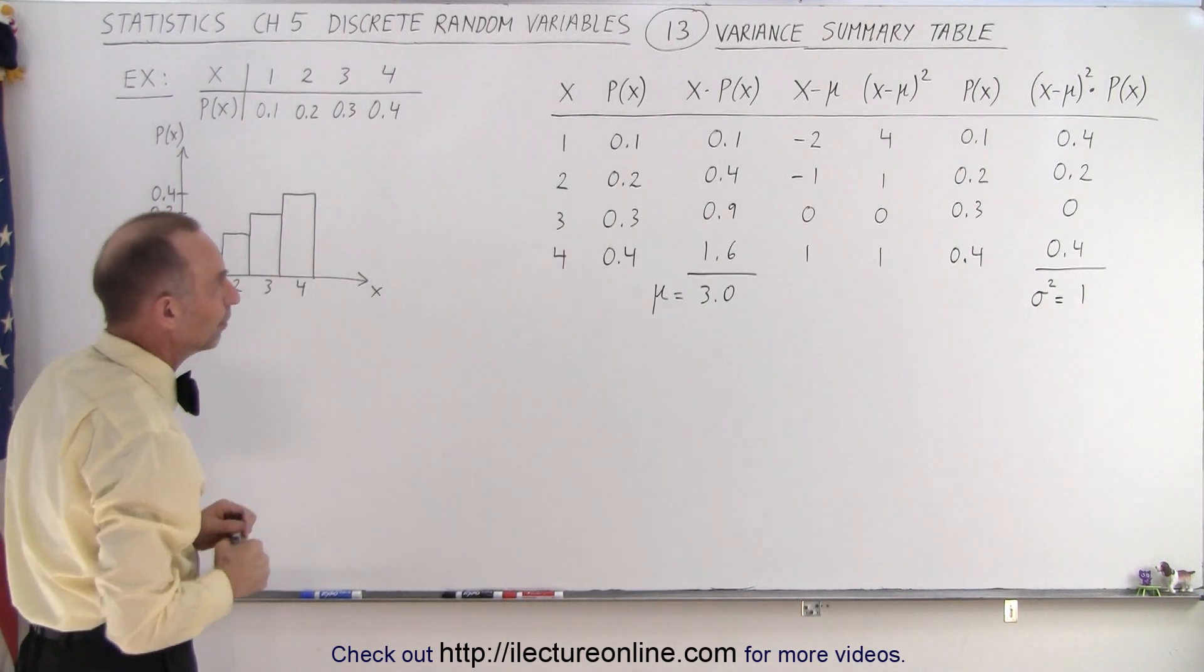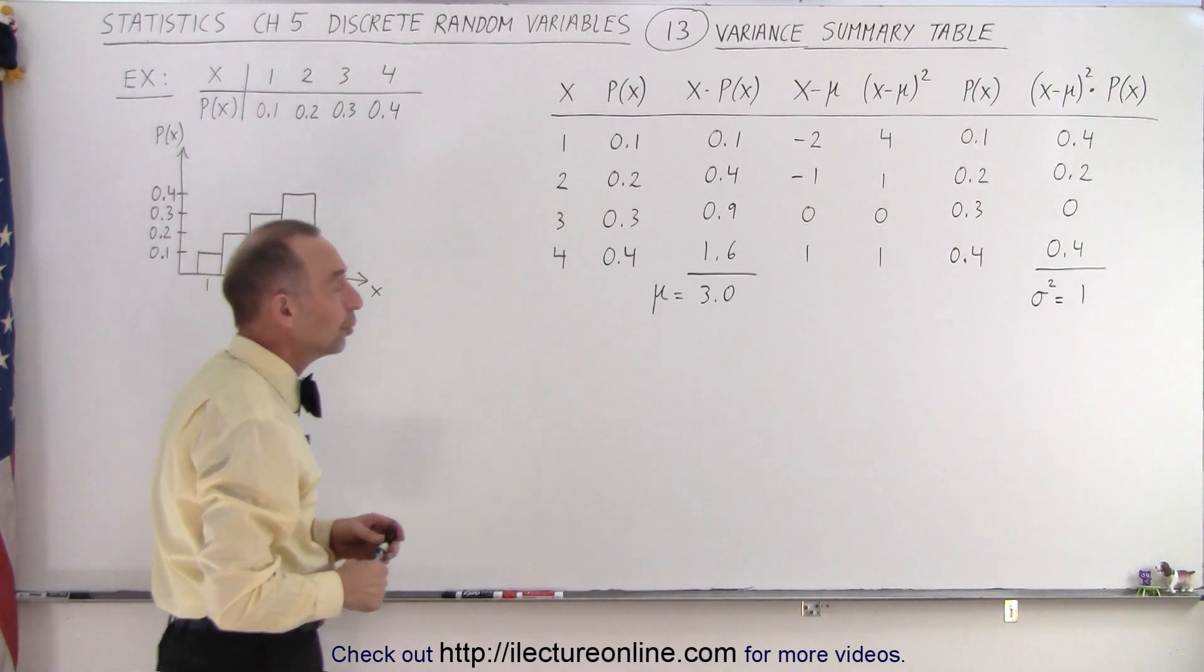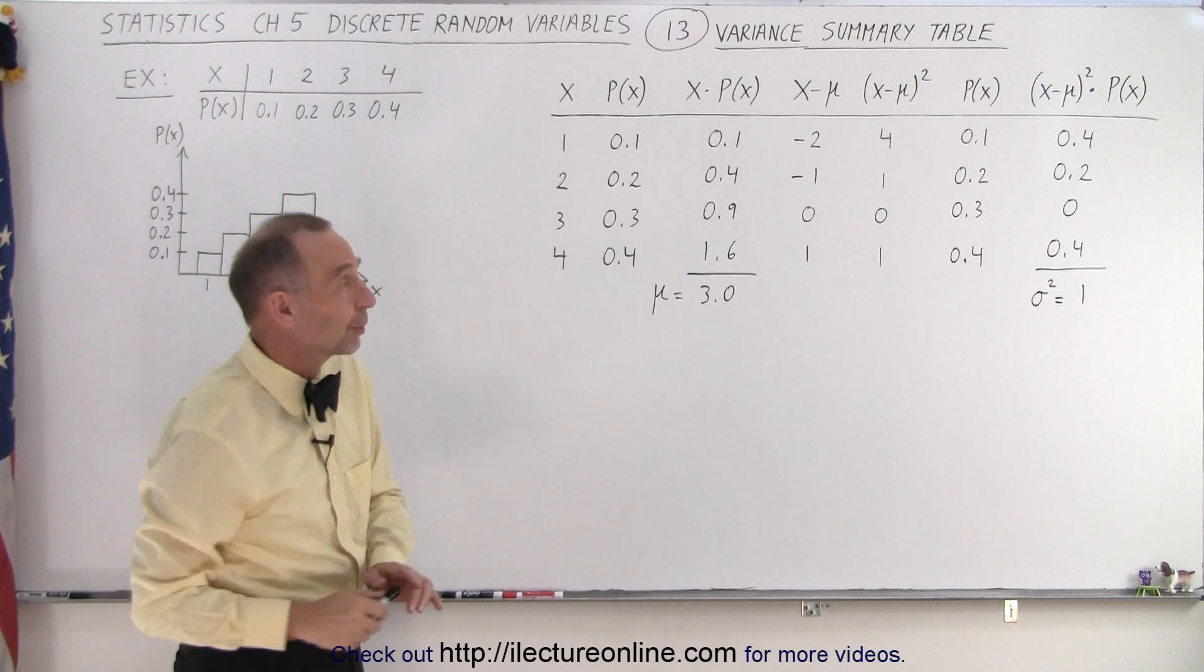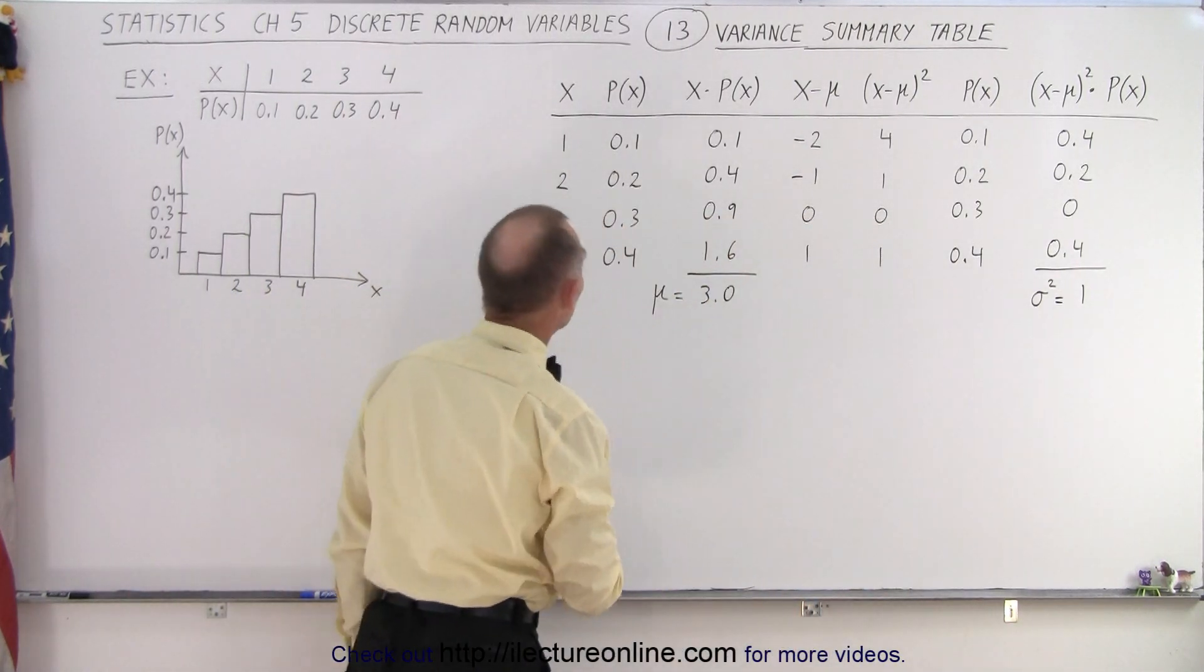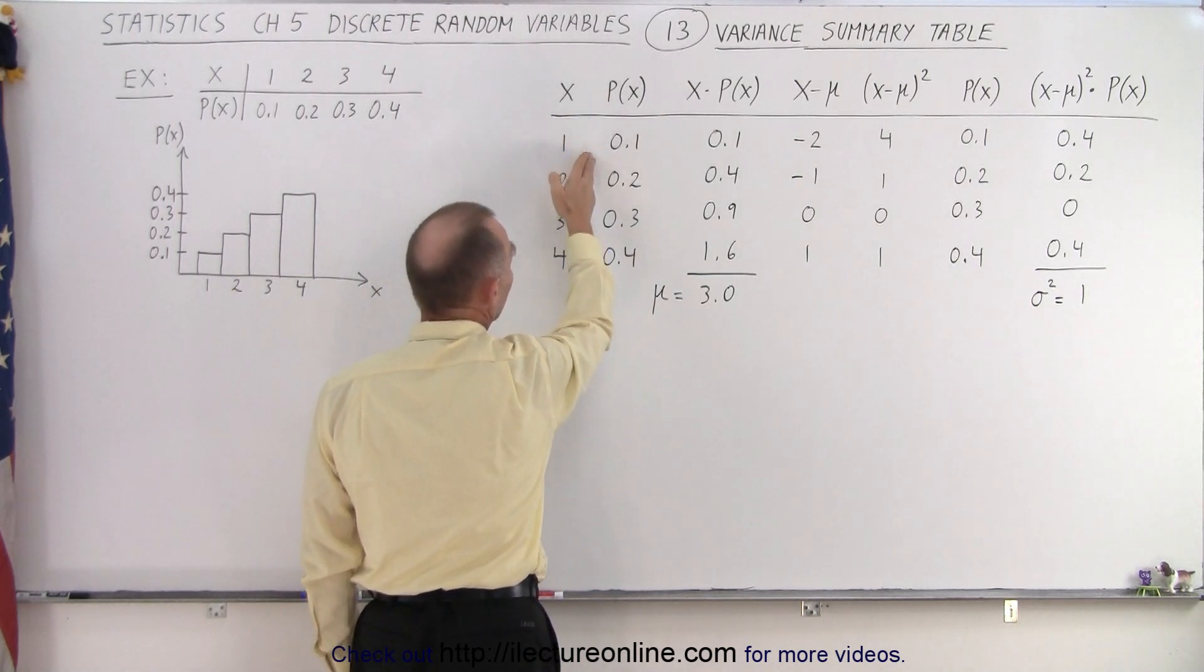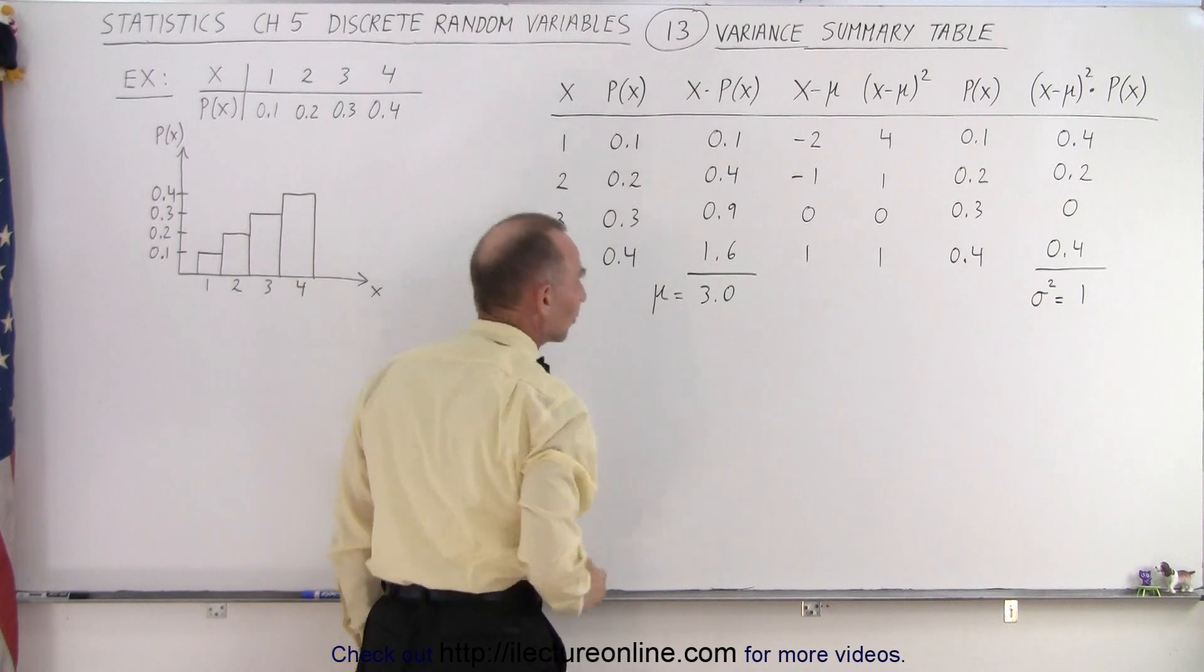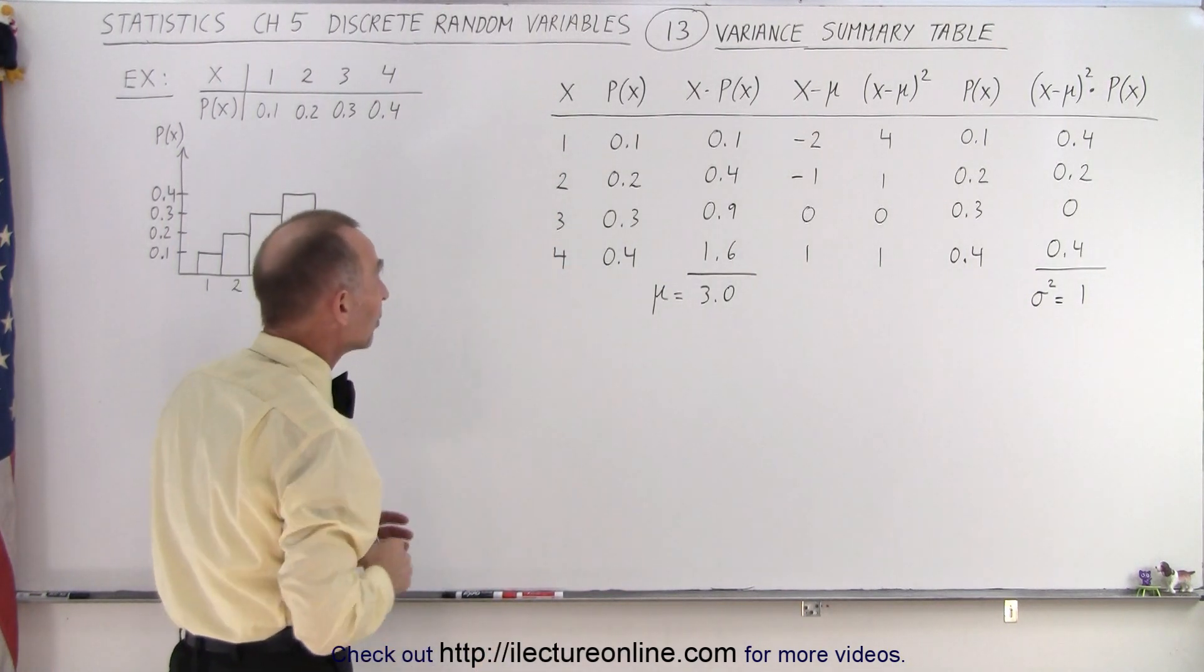So here's our table. We call it the variance summary table. And notice the reason why we call it the variance summary table is because essentially we're trying to calculate the variance. And notice we start with all the possible values for x and the corresponding probabilities. So these are the probabilities of our random discrete variable.